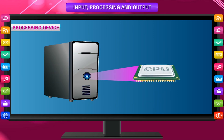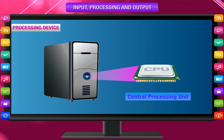Processing Device: A computer has a small chip called the CPU. The full form of CPU is Central Processing Unit. The CPU is the main component which is used to manipulate data.